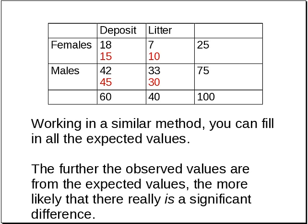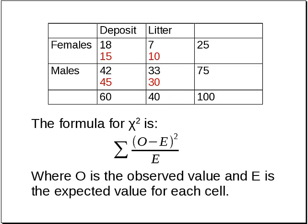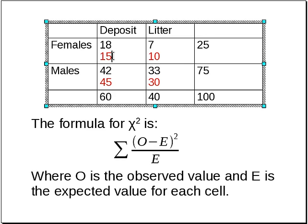The further these observed values are from the expected values, the more likely that there really is a significant difference — that there really is an effect of gender. So now we have to have a formula for computing the chi-squared statistic. For every cell, we take the observed number and subtract the expected number, square that, and divide by the expected number. It's the sum over all cells of (observed minus expected), squared, divided by the expected value.